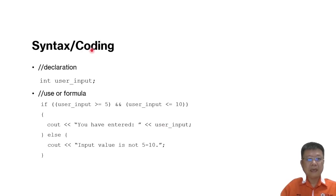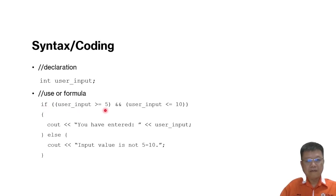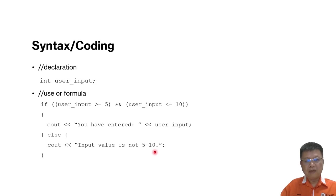Here is the syntax in code: if user_input >= 5 AND user_input <= 10, we output the entered user input; else we output that the input value is not between five and ten.